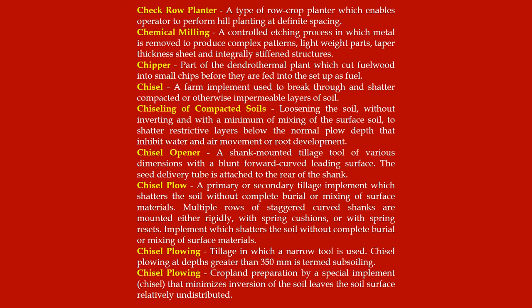Chisel opener: a shank mounted tillage tool of various dimensions with a blunt forward curved leading surface; the seed delivery tube is attached to the rear of the shank. Chisel plow: a primary or secondary tillage implement which shatters the soil without complete burial or mixing of surface materials; multiple rows of staggered curved shanks are mounted either rigidly with spring cushions or with spring resets.